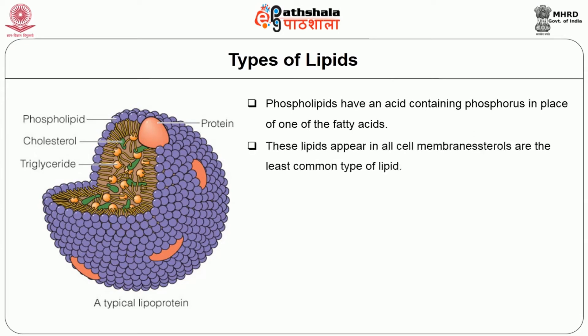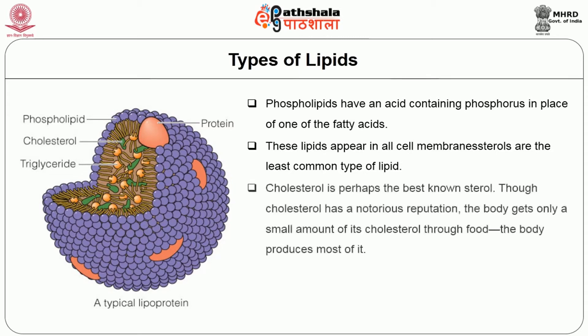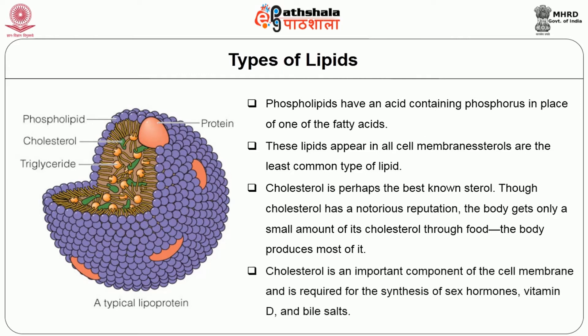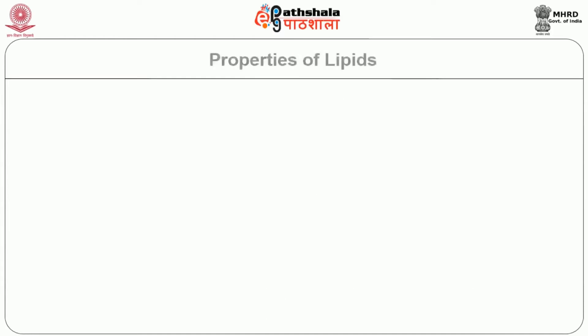Phospholipid is a lipid which contains phosphorus in the place of one of the fatty acids. It is a very important lipid present in the cell membrane. The next important class of lipid is cholesterol — the sterols. Although notoriously reputed for causing heart attacks and atherosclerosis, cholesterol is also very important as part of the cell membrane and is required for the synthesis of sex hormones, vitamin D, and bile acids.